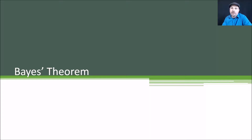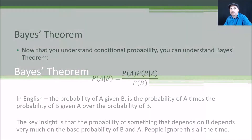Now that you understand conditional probability, we can talk about Bayes' theorem. You hear about this a lot, but not many people really understand what it means or its significance, so let's talk about Bayes' theorem at a high level. Bayes' theorem is simply this: the probability of A given B is equal to the probability of A times the probability of B given A, over the probability of B.